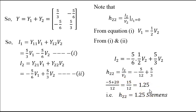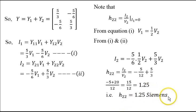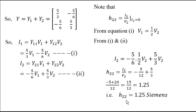So H22 is 1.25 Siemens. Since in this problem the options were not given, we were to find the value of H22 directly. The value of H22 is 1.25 Siemens. Thank you.